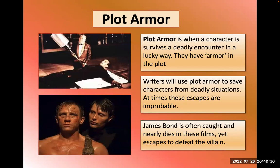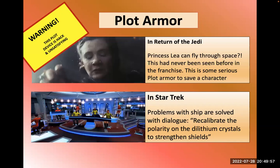Plot armor is when a character survives a deadly encounter in some lucky way — we say they have armor in the plot. James Bond is a classic example: the villain always traps him, monologues about how they've got him, but he always gets away. This happens in superhero movies too. One of the worst examples was in a recent Star Wars movie where Princess Leia was blown into space but somehow flew through space to safety — a power never seen before, not foreshadowed — and many people complained.